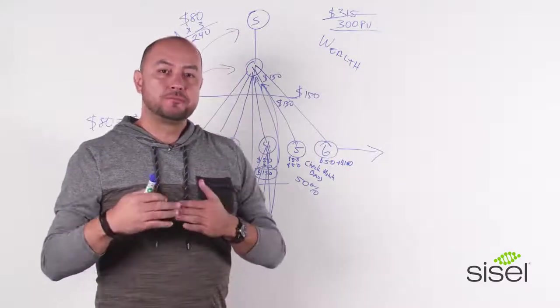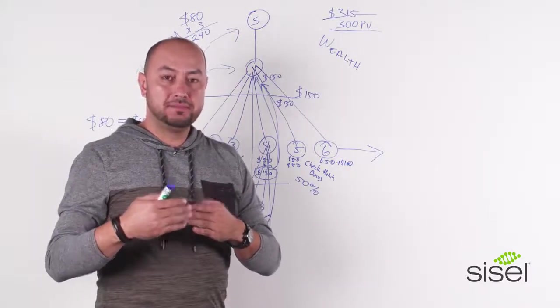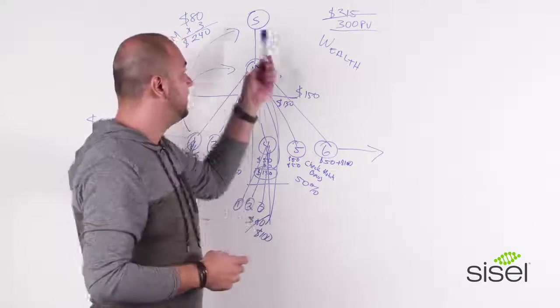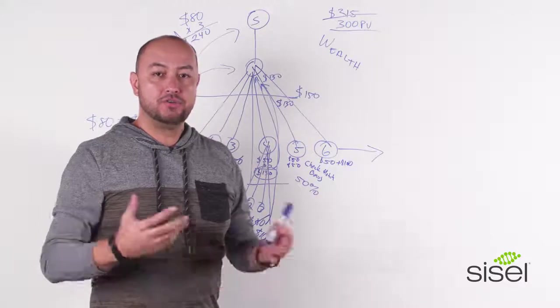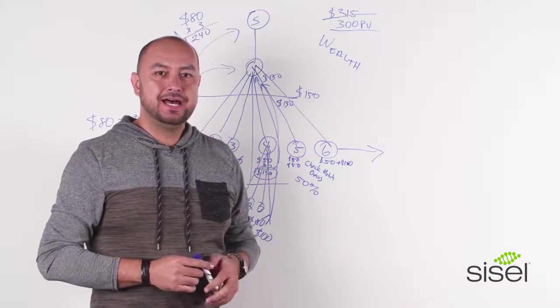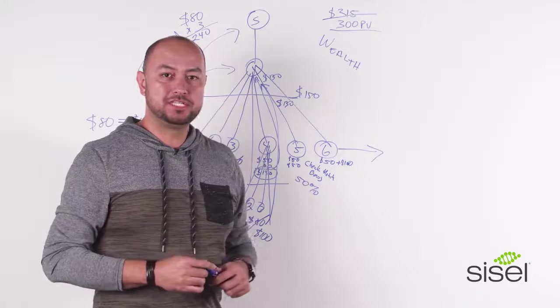If your sponsor became a distributor after August 29th, then he needs to be Wealth Builder qualified so he can receive the commissions. So hopefully this video will help you guys understand a little more the Wealth Builder system.